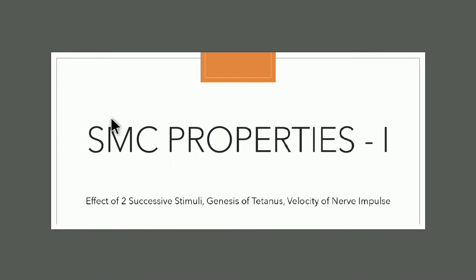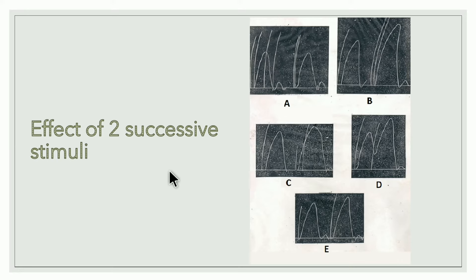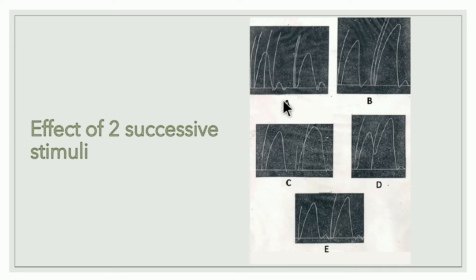Section two is simple muscle curve properties Part 1: effect of two successive stimuli, genesis of tetanus, and velocity of nerve impulse. For effect of two successive stimuli, two stimuli are given to the skeletal muscle simultaneously within a short period of time. There are five graphs — A, B, C, D, and E — each depending on when the second stimulus is applied.